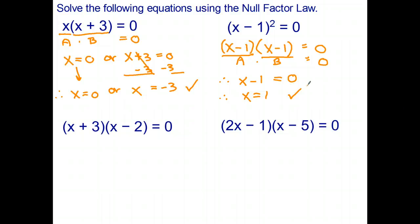Okay students, welcome back. Well, let's see how you went. So here we have an expression a, here we have the expression b, and the null factor law says a times b is zero. So therefore, x plus three equals zero, or x minus two is zero. One of those two factors has to equal zero.